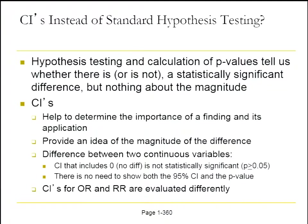If we're evaluating the difference between two continuous variables — say LDL concentrations in two groups — and we assume the two therapies are similar, our hypothesis would be that there's no difference. Our confidence interval test is set up such that if our confidence interval includes zero — i.e., no difference — then we conclude there's no statistically significant finding, and the associated p-value would be greater than 0.05. There's no need to show both the 95% confidence interval and the p-value — they each do their jobs independently.